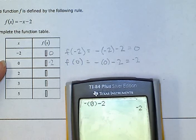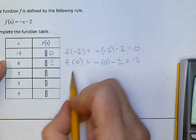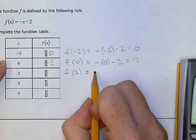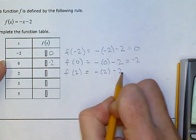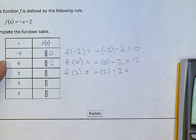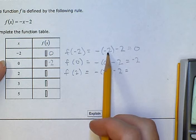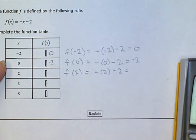Now we're going to try f of 2. When x is 2, we just put it right in the same spot where x was. See how I put negative 2 inside the parentheses, then 0, then 2. We're following that same pattern every time.